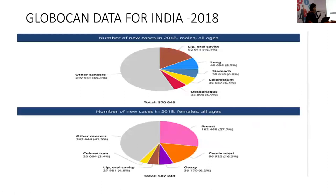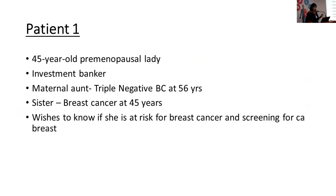Moving on to India, using GLOBOCAN 2018 data: in males the majority of newly detected cancers is head and neck — lip and oral cavity — followed by lung, gastric, and colorectal. In women, breast is on top followed by cervix, ovary, head and neck, and colorectal. We will deal with screening for breast, cervix, lung, head and neck, and colorectal.